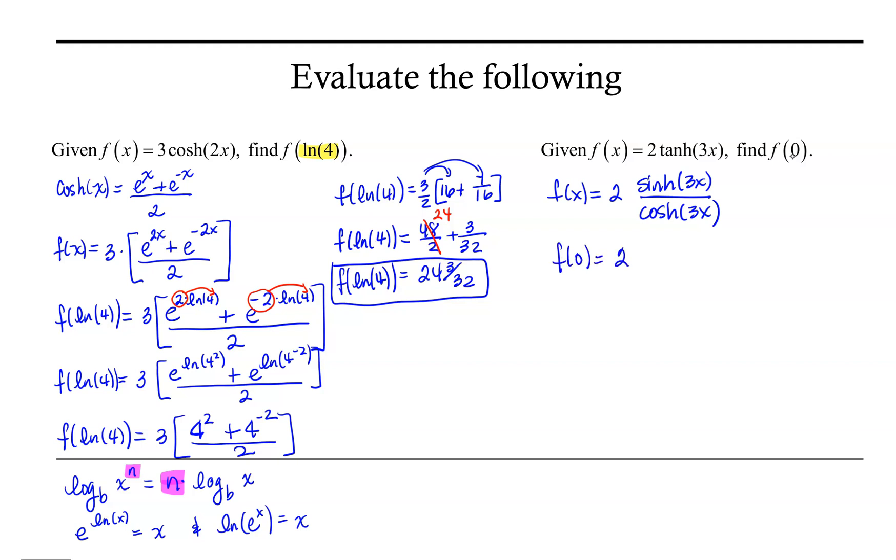And then let's go ahead and find f of 0. That would be 2 times sinh, 3 times 0 is 0, over cosh of 3 times 0, which is 0.